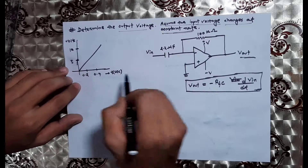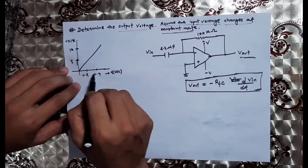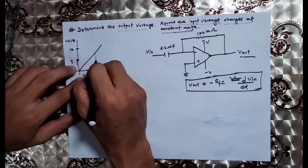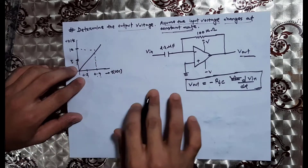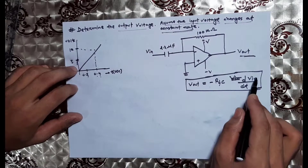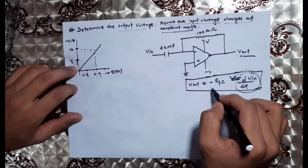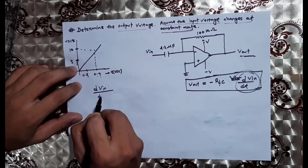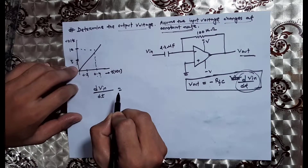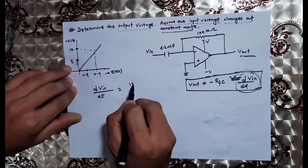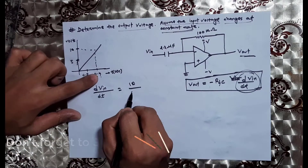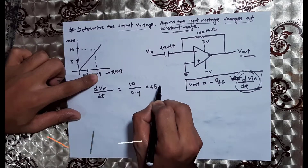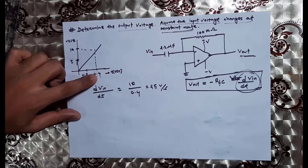We have to observe the data in time in seconds. dVin/dt equals 10 divided by 0.4, which gives us 25 volts per second. Okay, very simple.